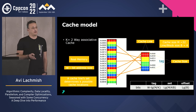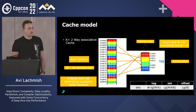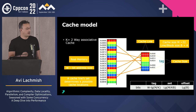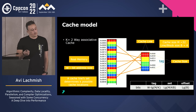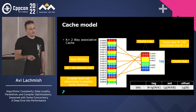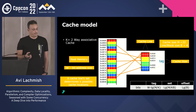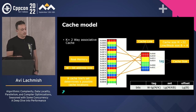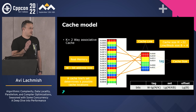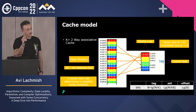A fully associative cache means each main memory line can reside anywhere in the cache, but the drawback is you must search all entries to find the right line. A direct-mapped cache causes eviction when two lines compete for the same location. The compromise is a set-associative cache, where each cache set can hold a fixed number of lines. The address bits are divided into: offset (position within the line), set (which set to place the line in), and tag (remaining bits identifying the exact line).